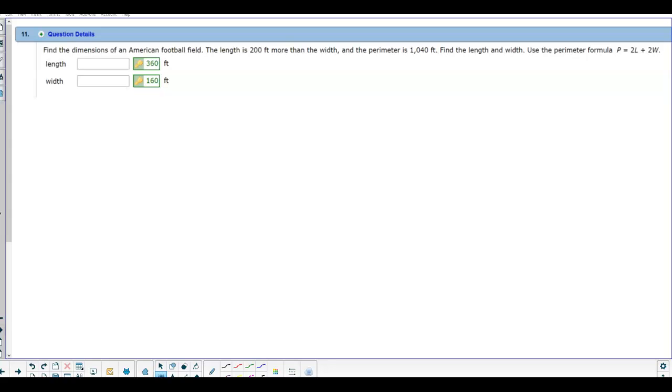Question number 11. It says, find the dimensions of an American football field. The length is 200 feet more than the width, and the perimeter is 1,440 feet. Find the length and the width, and then use the perimeter formula P = 2L + 2W.